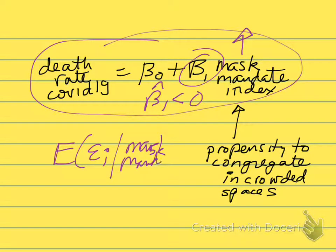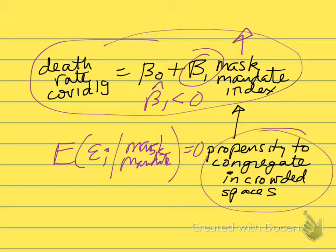That depends on our assumption that the error term conditional on the mask mandate equals zero. That assumption may not be very valid, because it's entirely possible the mask mandate is correlated with, for example, the propensity of people in a county to congregate in crowded spaces.